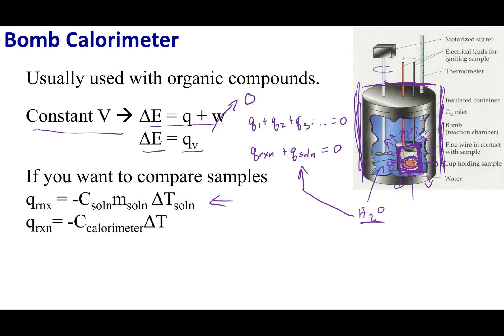So Q_reaction = -C_solution × mass × ΔT. One thing to note is that this is a machine, so the mass of water is always the same and the heat capacity of water is the same. The calorimeter itself can also absorb energy. Because the machine doesn't change from experiment to experiment, I can combine the specific heat and mass into one bigger constant called C_calorimeter.